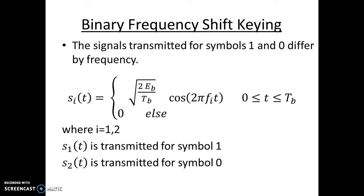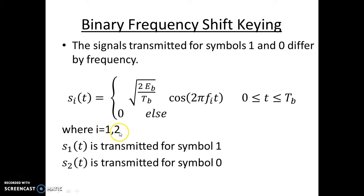Binary Frequency Shift Keying: as the name suggests, the frequency is being shifted according to the incoming signal. The incoming signal is either a one or a zero — it is digital in nature. According to whether this incoming signal is a one or a zero, the frequency is being shifted. The transmitted signal s_i(t) is given by: root of (2E_b / T_b) × cos(2πf_i × t), for zero to T_b, where T_b is the bit duration and E_b is the energy per bit. The term root of (2E_b / T_b) represents the amplitude of this wave.